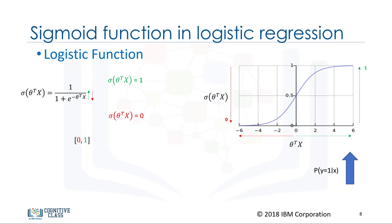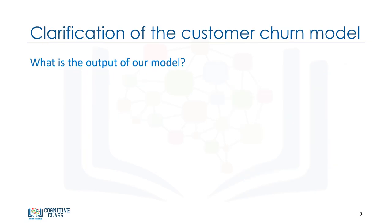When the outcome of the sigmoid function gets closer to 1, the probability of y equals 1 given x goes up. And in contrast, when the sigmoid value is closer to 0, the probability of y equals 1 given x is very small. In logistic regression, we model the probability that an input x belongs to the default class y equals 1, written formally as P(y=1 | x). We can also write P(y=0 | x) as 1 minus P(y=1 | x).